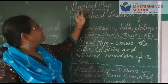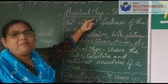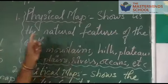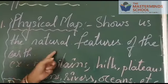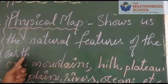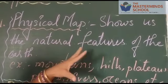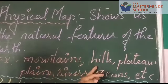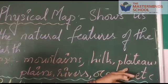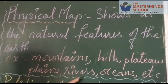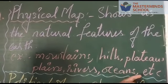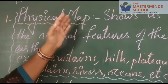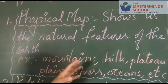Look here. This is the physical map. A physical map shows us the natural features of the earth. The natural features are mountains, hills, plateaus, plains, rivers, oceans, etc. So the physical map shows all those things.